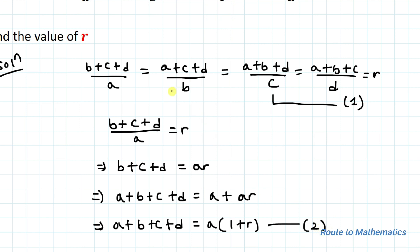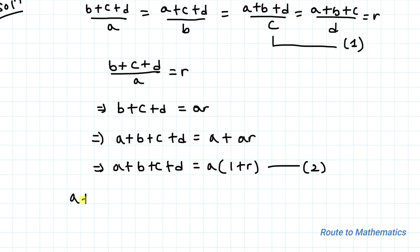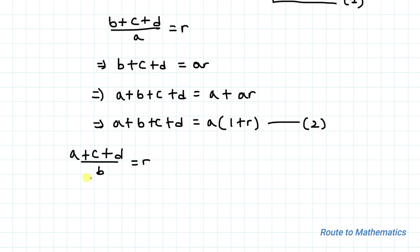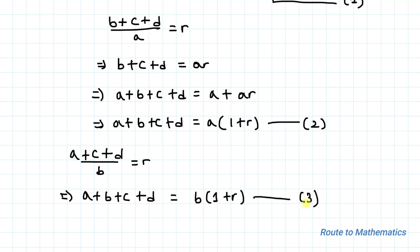Again equating the second ratio with r, we have (a+c+d)/b = r. Similarly, by doing cross multiplication and adding b to both sides of the equation, we have a+b+c+d = b(1+r). Let's take this as equation 3.